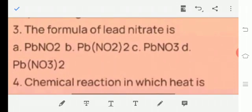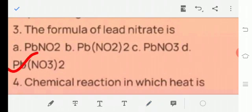Question number 3, the formula of lead nitrate is A. PbNO2, B. Pb(NO2)2, C. PbNO3, D. Pb(NO3)2. The answer is D. Pb(NO3)2.